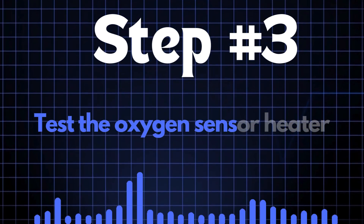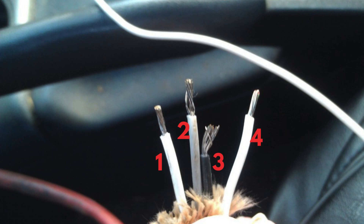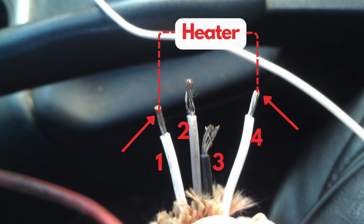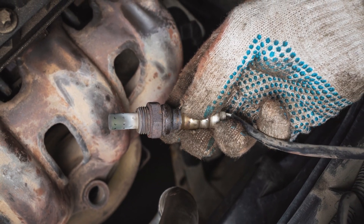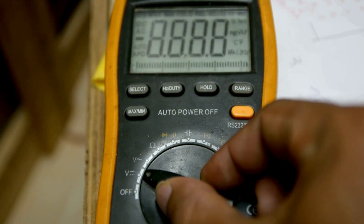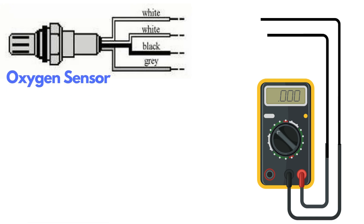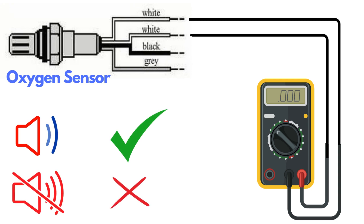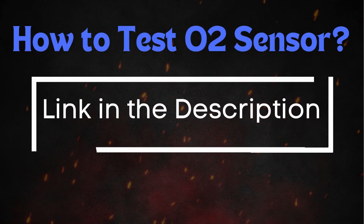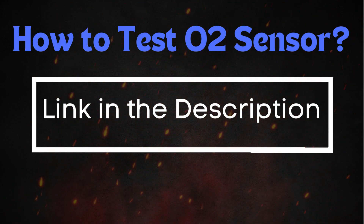Step 3: Test the oxygen sensor heater. Oxygen sensors typically have four wires — two of these wires, usually of the same color, are dedicated to the heater circuit within the sensor. Over time, the heater circuit can burn out and stop functioning properly. To test the heater circuit, you'll need a multimeter. Set the multimeter to check for continuity, then place the probes on the two heater wires. If the circuit has continuity, the multimeter will beep, indicating the heater is functioning. If there's no beep, the heater circuit is broken and you'll need to replace the oxygen sensor. If you want a more detailed guide on how to test the oxygen sensor, be sure to check out our in-depth video on this topic.